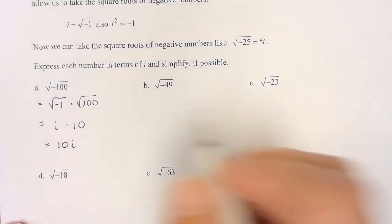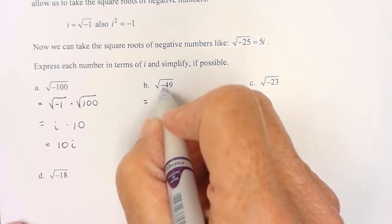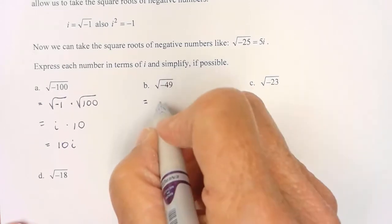You try b and c. I know it's going to be an i. Square root of 49 is 7.